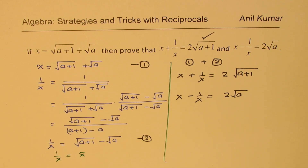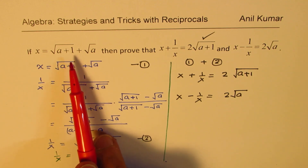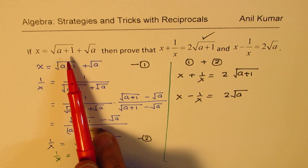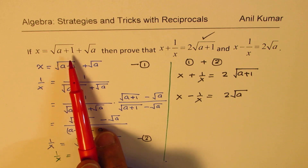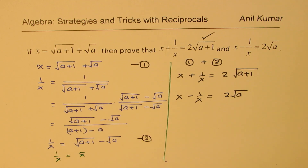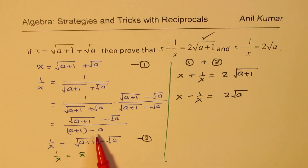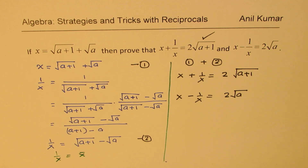Let's have a rapid fire test based on what we just learned. To summarize: if we are given square roots of two numbers which differ by just 1 — like (a+1) and a — then only we get this result. Otherwise you have to work through the full rationalization. The difference of the two values is 1, so the denominator was 1. If it were something else, we'd get that as the denominator.